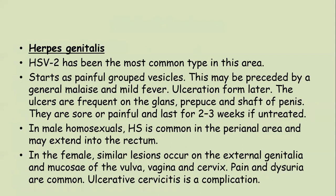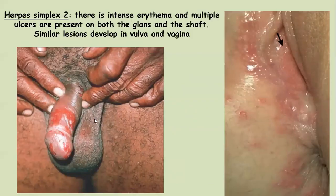Herpes genitalis is primarily an infection of herpes simplex virus 2. It starts as painful grouped vesicles that may be preceded by general malaise and fever. Ulceration develops later; the ulcers are frequently on the glans, prepuce and shaft of the penis. They are sore and painful and last for two to three weeks if untreated. In male homosexuals, herpes simplex is common in the perianal area and may extend into the rectum. In females, similar lesions occur on external genitalia and mucosa of vulva, vagina and cervix. Pain and dysuria are common. Ulcerative cervicitis is a common complication.